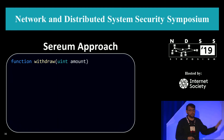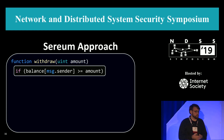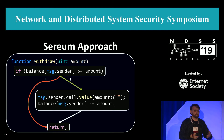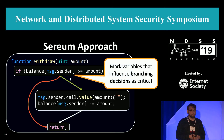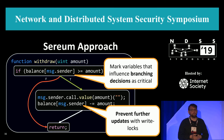Let me illustrate with an example. We have a Solidity function called withdraw, which checks whether the sender has invested enough ether and will then send it back to the sender. There is an if condition which does the branching — it checks the balance for enough ether. If not, it will simply return. But if there is enough ether, it will send the ether and update the balance afterwards. This is vulnerable to re-entrancy. What Serium does is mark the variable balance as a critical variable because it influences the decision whether to take the true or false branch. Then we prevent further updates using write logs, which means we keep track of those critical variables. If they are written to in a later invocation, we will stop that update.